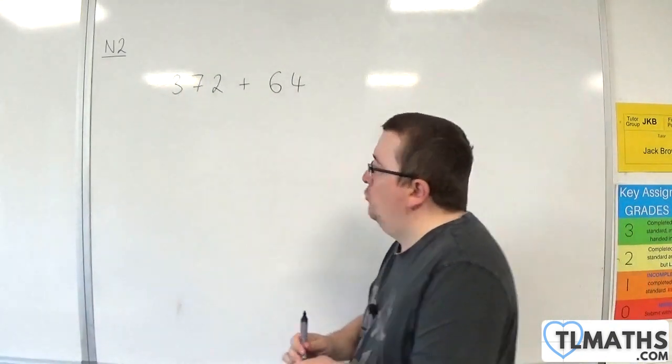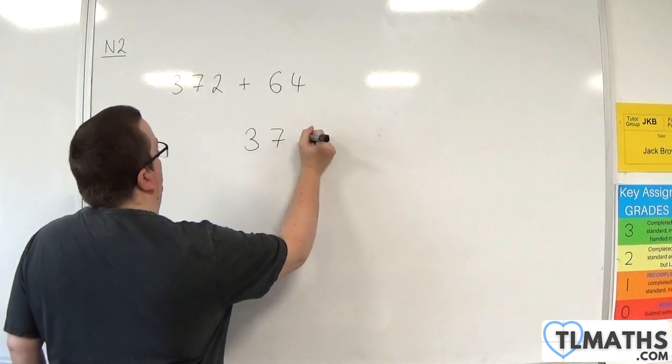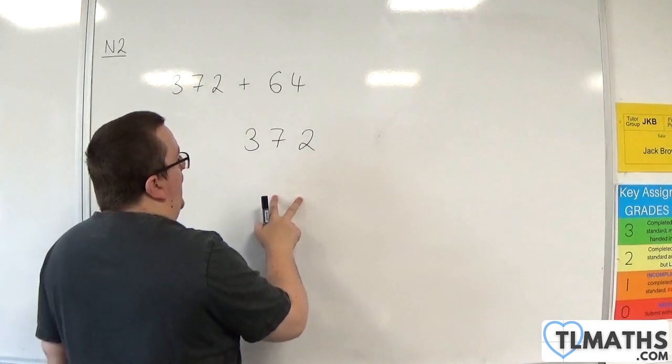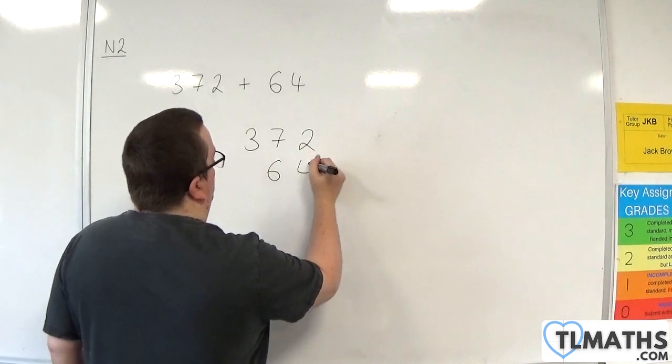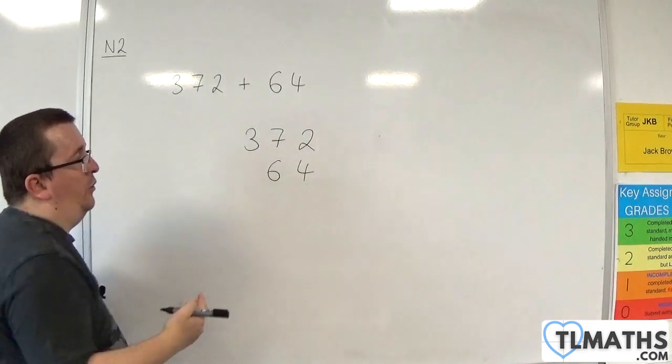So first of all, let's get the layout right. I'm going to write 372, and I'm going to write 64 below it. And I'm going to make sure that the units column matches up and lines up, and the tens column lines up.